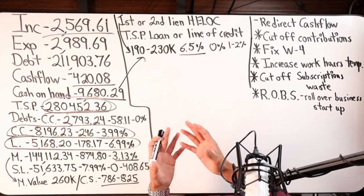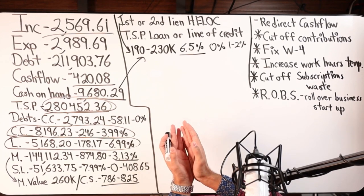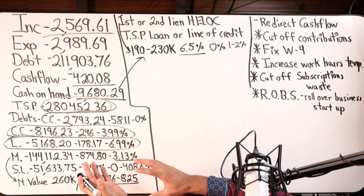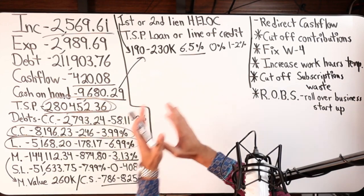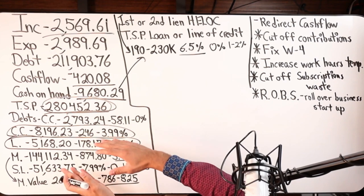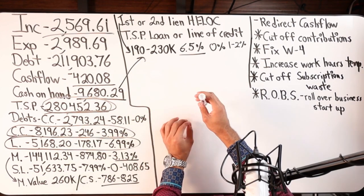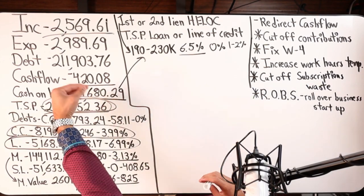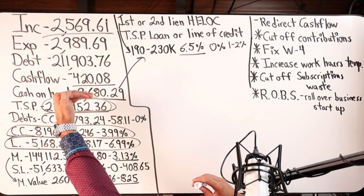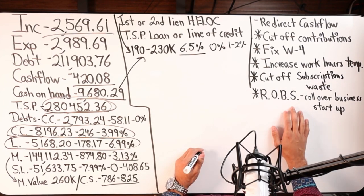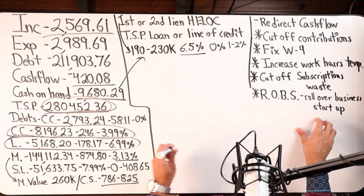I've seen TSP loans as low as like one percent, like one and a half, 1.75% - that is extremely low. And if that meant just temporarily moving some debts over here to 1.75% and having a much lower payment requirement to potentially get to a net zero, then I would consider it.